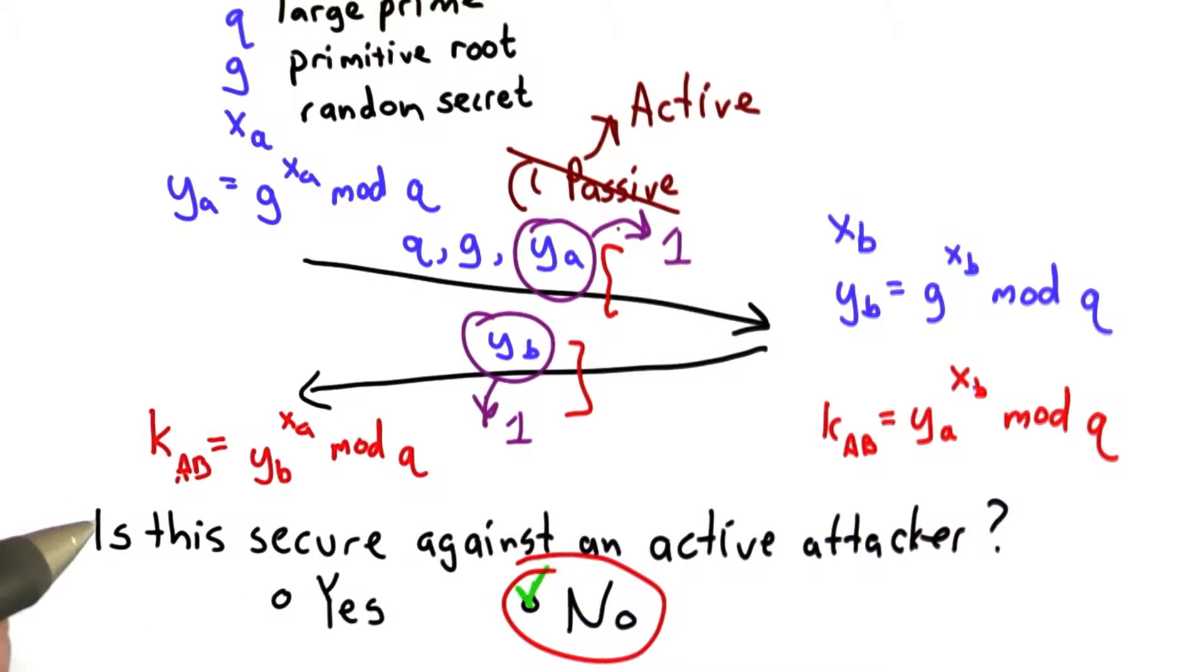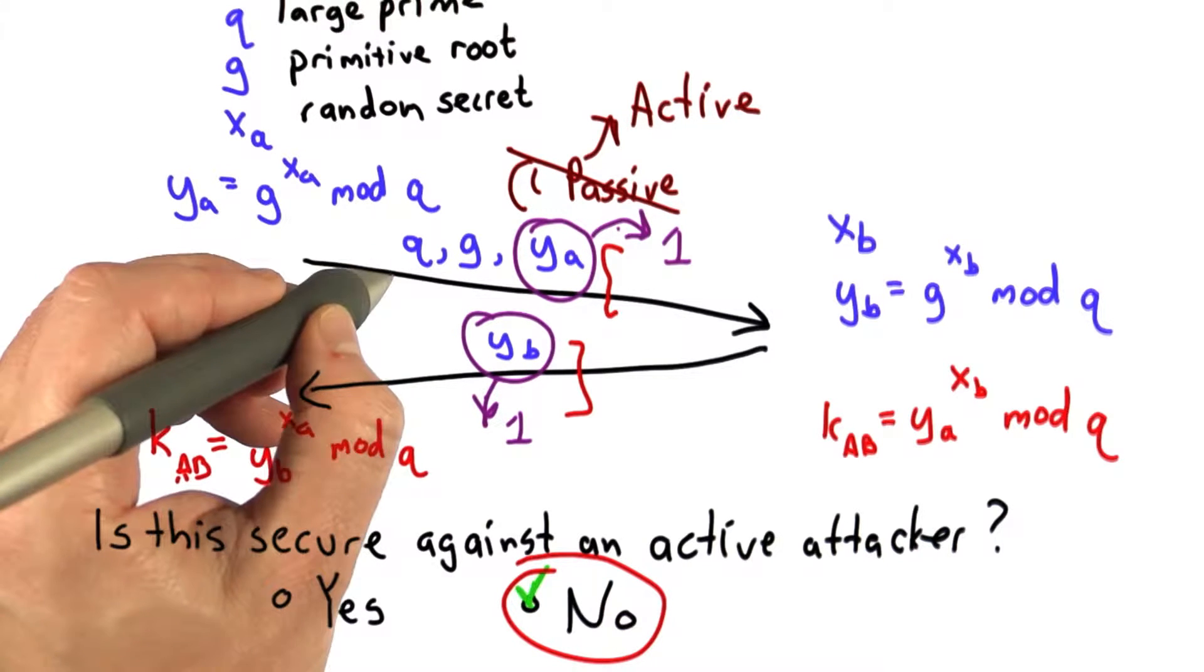It would be the key value 1, which would be known to the eavesdropper and make all messages encrypted using that key vulnerable.